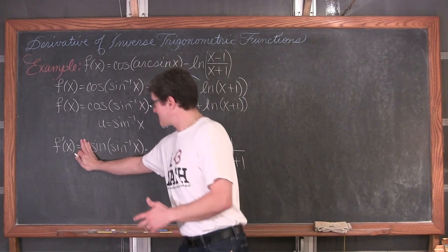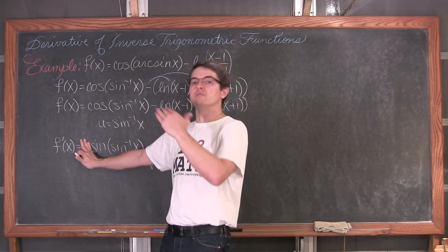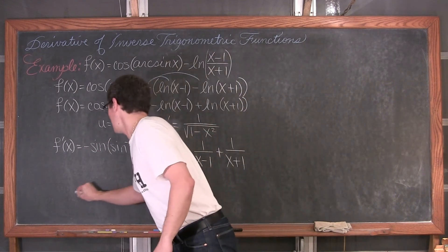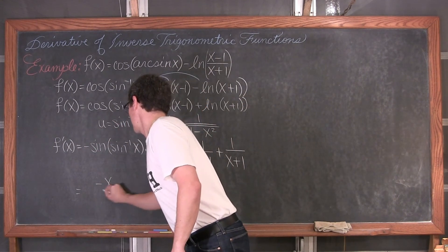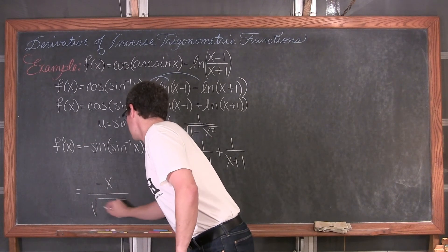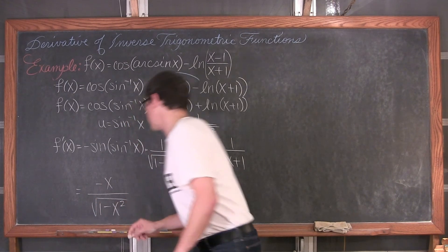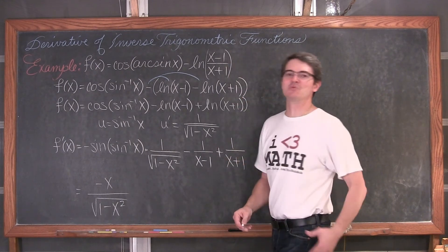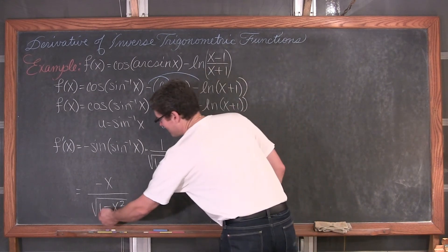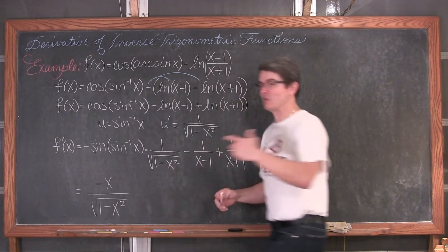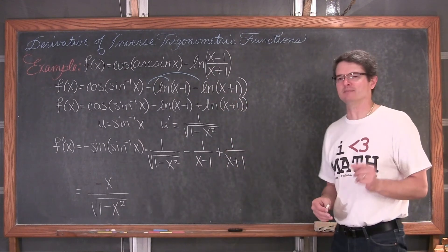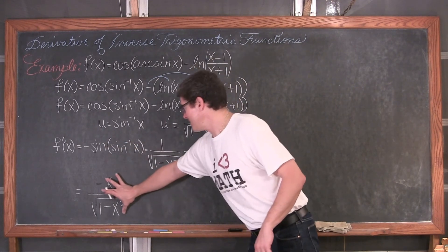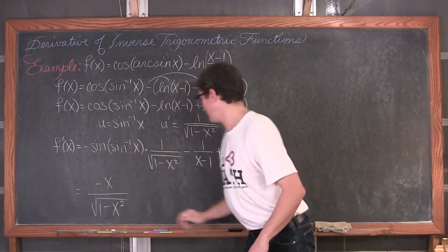So we have negative x over the square root of 1 minus x squared as our first simplified term. And hopefully by the time you are in calculus you are not making the mistake of thinking 1 minus x squared simplifies to 1 minus x — it does not.